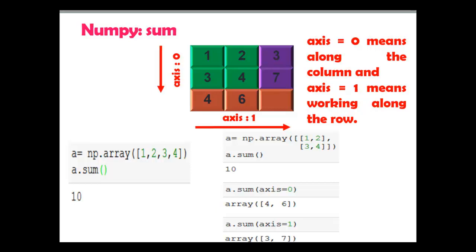On the right side I have created a 2D array. Since we have not mentioned axis zero or one, even though it's a 2D array it is considered as a flattened 1D array and the sum is calculated accordingly. For a.sum with axis=0, that means along the column: 1 plus 3 equals 4, 2 plus 4 equals 6. For axis=1, along the row: 1 plus 2 equals 3, 3 plus 4 equals 7. So let me show you this practically in the Jupyter notebook.